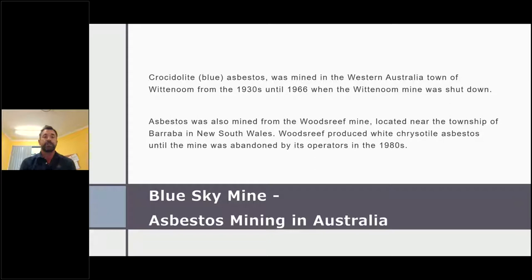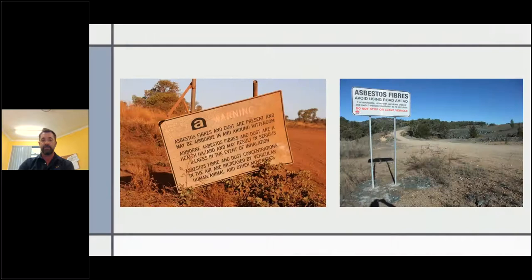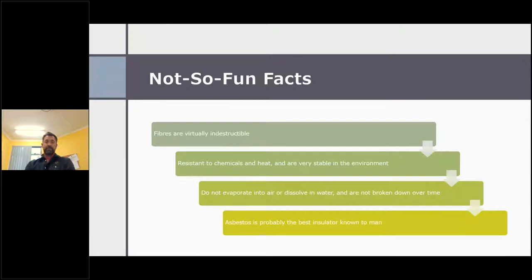Regarding mining of asbestos in Australia, crocidolite — the blue asbestos — was mined in Western Australia at Wittenoom from the 1930s until 1966. Less well known was the Wood Street Mine in New South Wales, where they produced white chrysotile asbestos, abandoned by its operators in the 1980s. The fibres are virtually indestructible — resistant to chemicals and heat and very stable in the environment. They don't evaporate into air or dissolve in water and are not broken down over time, which is what makes asbestos so problematic now.